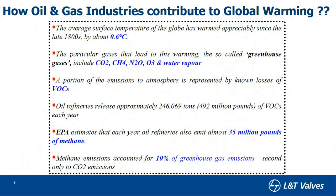The oil and gas industry contributes to major emissions because it deals with crude oil extracted from the earth. There is a refinery which treats it, and the refinery produces gases. Some of these gases are used in chemical plants, which again produce some harmful gases. Any leakage of these from the plant is going to cause global warming. Among the industries, we cater to oil and gas predominantly, power industries, water industries, and nuclear industries.